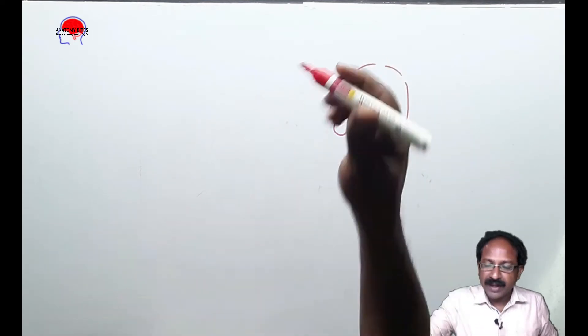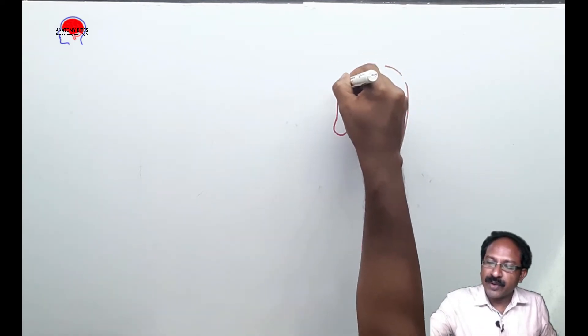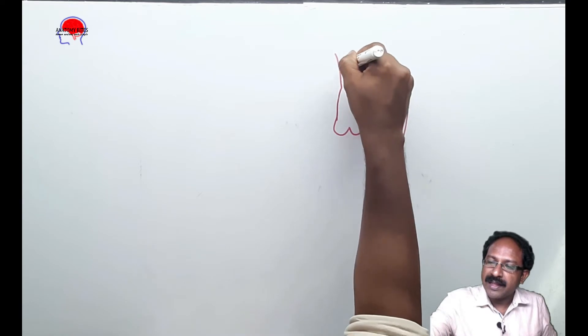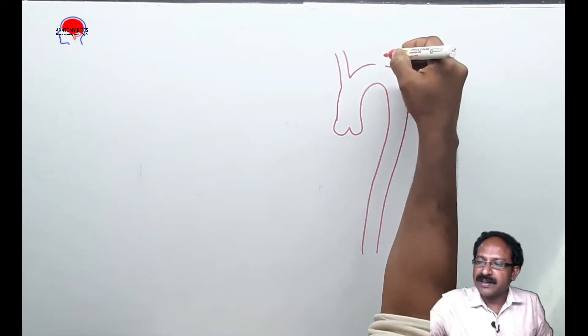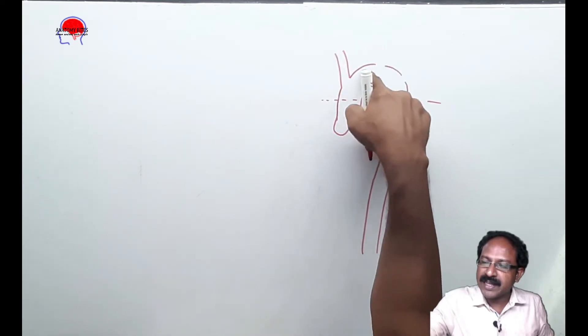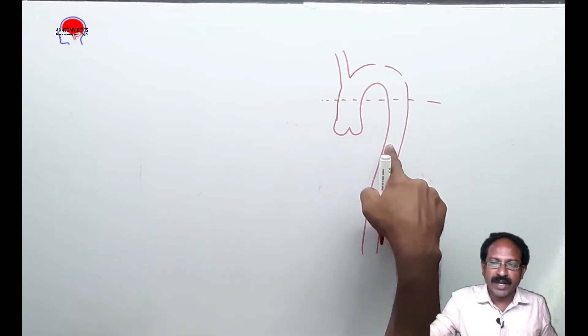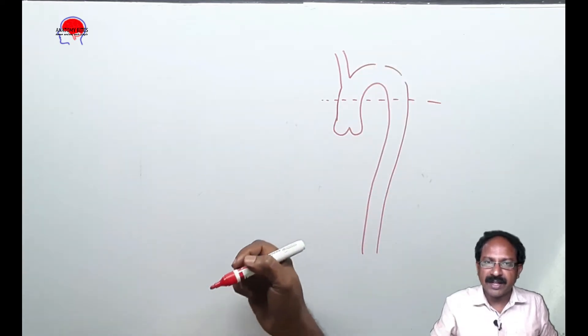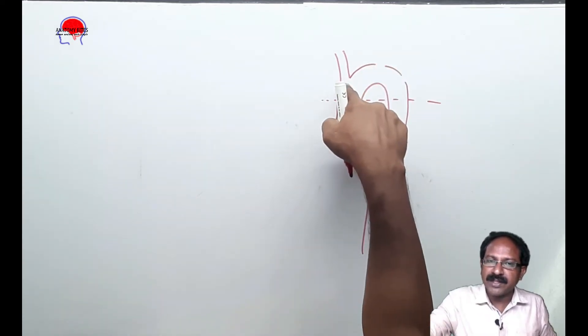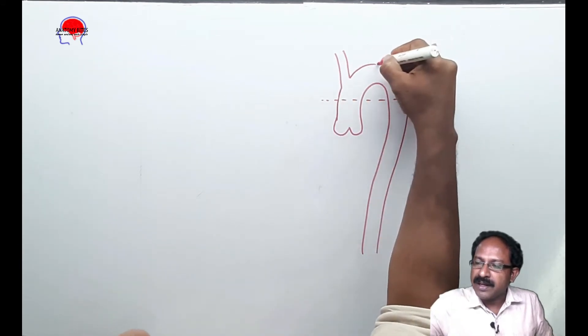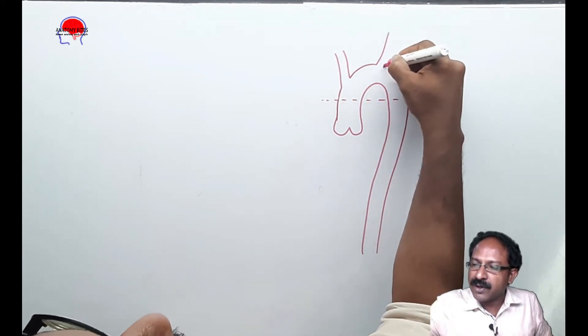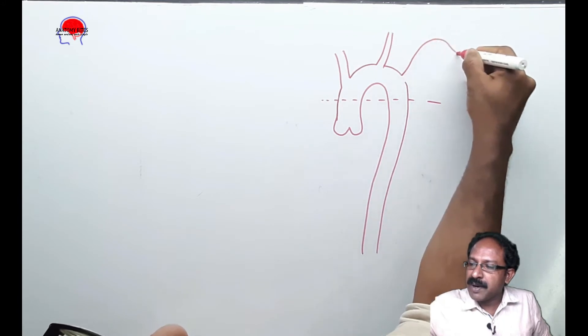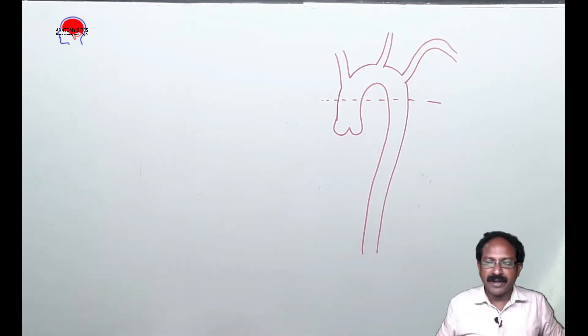Here is the arch of aorta with its branches, including the brachycephalic trunk. This is the ascending aorta, that is the arch of aorta, and that is the descending thoracic aorta. The arch of aorta has three branches: the first branch is the brachycephalic trunk, the second branch is the left common carotid, and the third branch is the left subclavian artery.